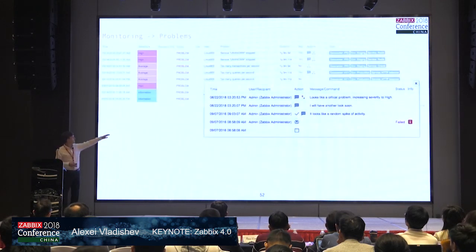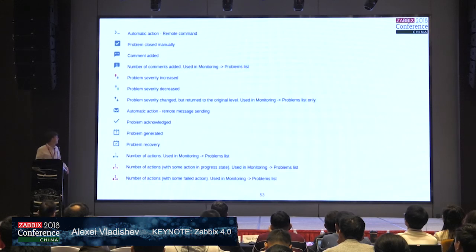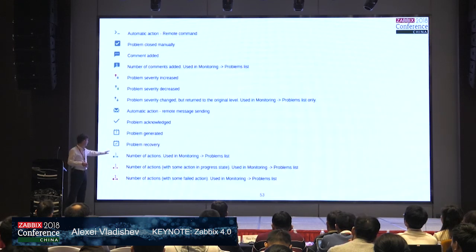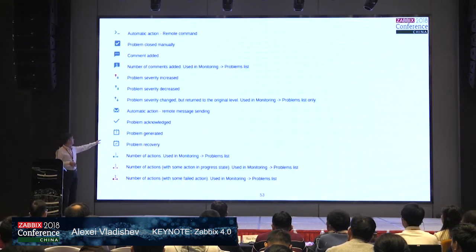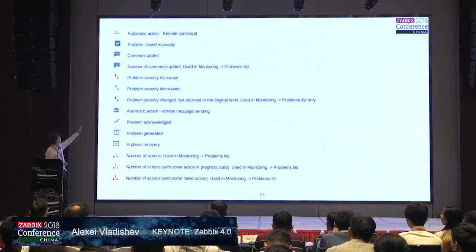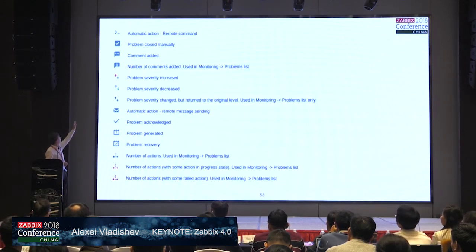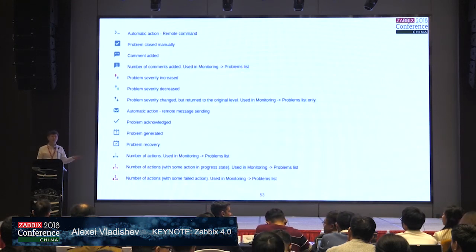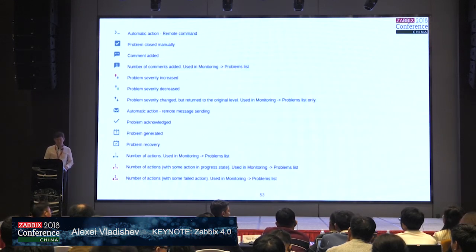For the actions column we introduced a number of different icons. Those icons are quite straightforward to understand. We have icons for actions such as: problem recovery, problem generated, acknowledged, manual close, decreased problem severity, increased problem severity. We have icons for all possible actions which can be performed on a specific problem.